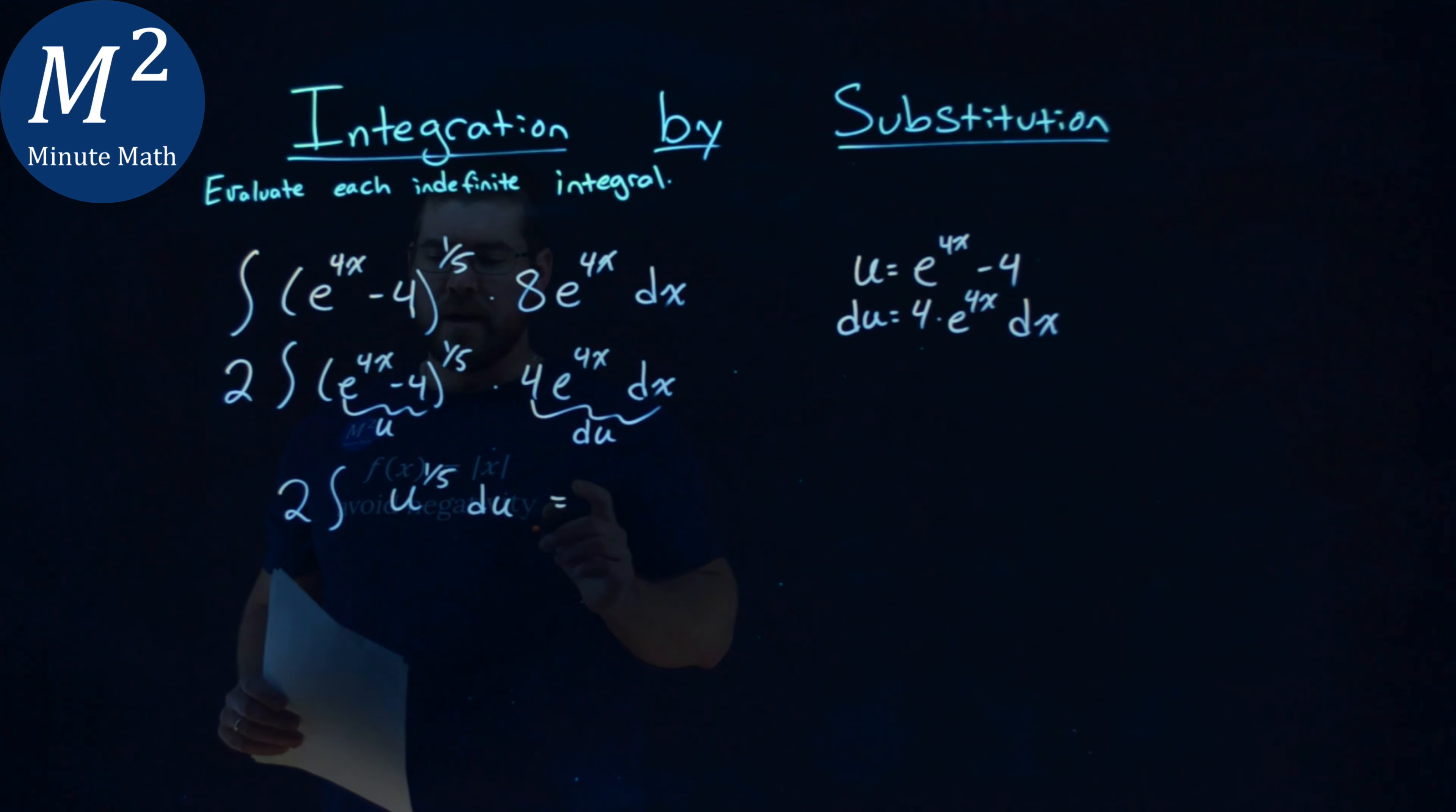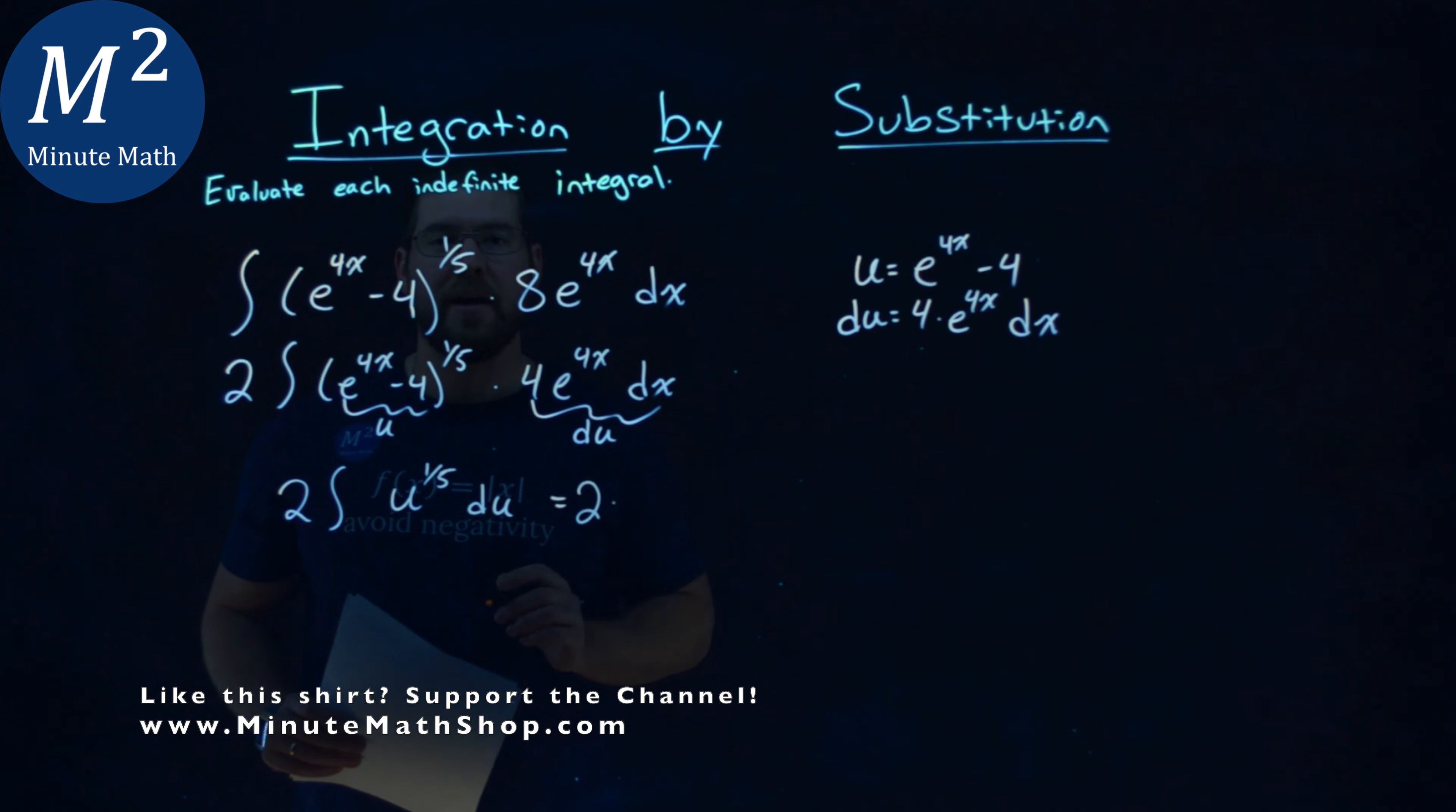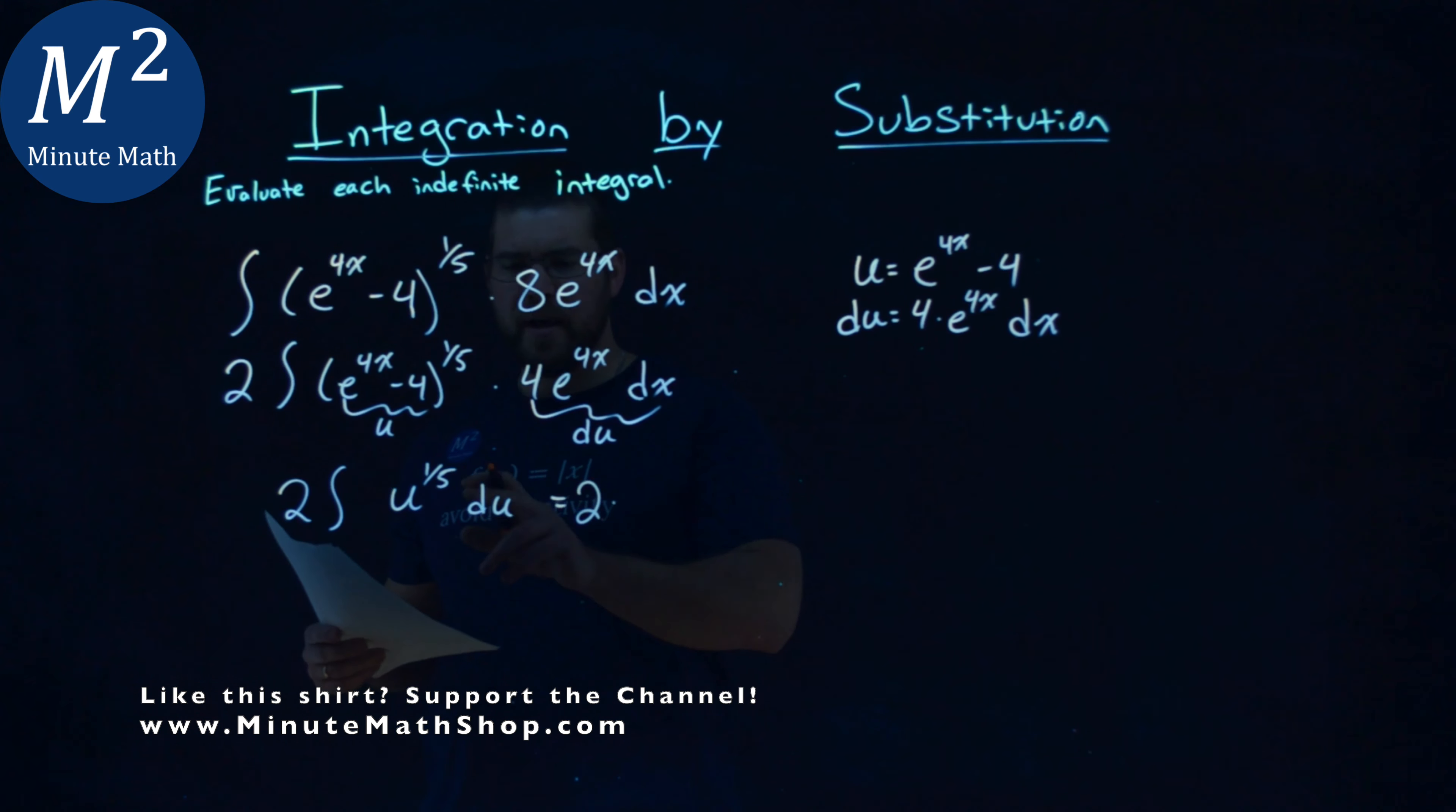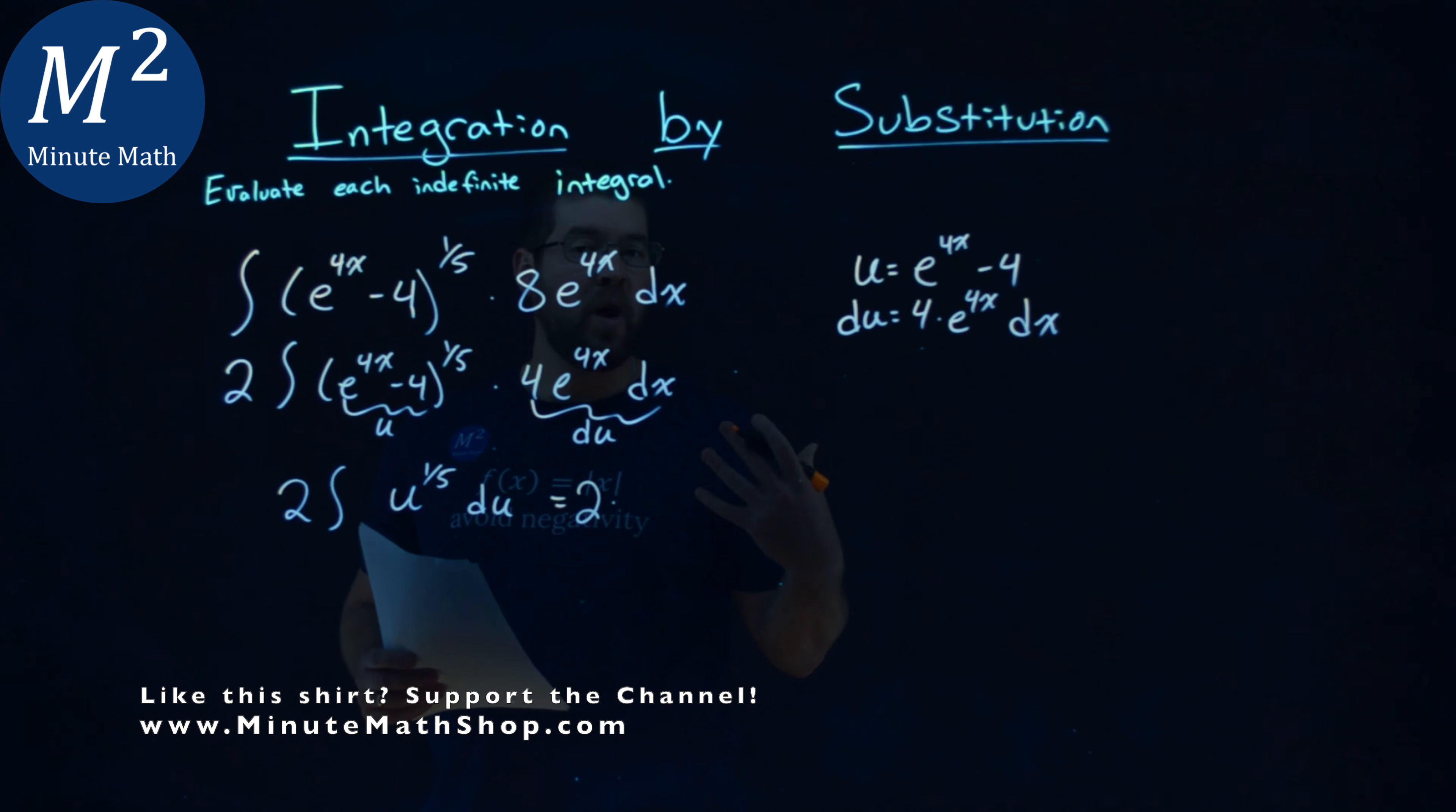Keep going across now. 2 stays out front. Let's use the power rule for the integral here. Okay. 1/5th plus 1 or plus 5/5ths is a 6/5th. So we have u to the 6/5th power.